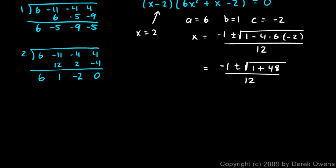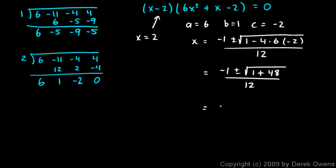So let me come down just a little bit. I have a little bit more room to work. So this is negative 1 plus or minus the square root of 49 over 12, which is negative 1 plus or minus 7 over 12. And we can work that out. Negative 1 plus 7 is 6, 6 over 12 is 1 half. And then negative 1 minus 7 is negative 8, negative 8 over 12 is negative 2 thirds. So now we have our solution. Three answers here: 2, 1 half, and negative 2 thirds. So x equals 2, 1 half, and negative 2 thirds.